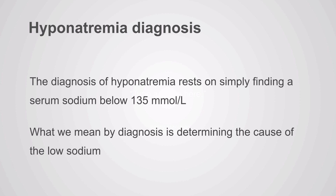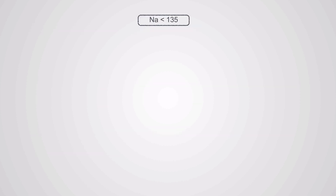The diagnosis of hyponatremia is really trivial — all you need is a blood test with a sodium less than 135. But usually what people mean by 'the diagnosis' is the etiology: what is driving that low sodium? What is the diagnosis behind the low sodium? And so we can use an algorithmic approach to get that answer.